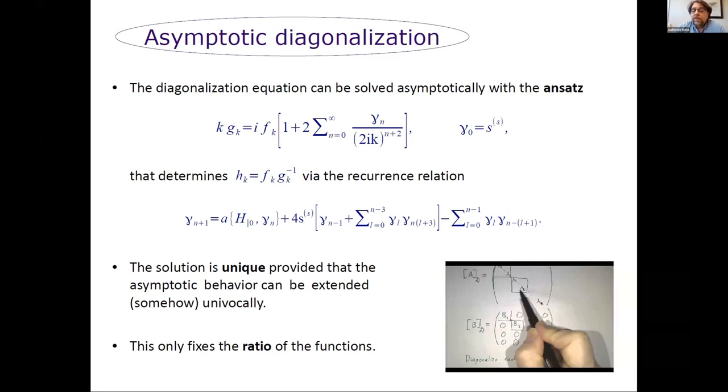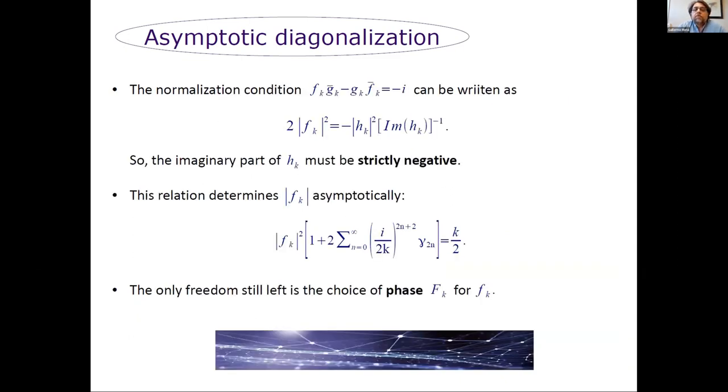Even so, we have only fixed the ratio of our functions f and g, so we still have some freedom, for instance, in fixing the function f. Well, the freedom is not so much, because you have the normalization condition, and this imposes, or this amounts to fixing the norm of the function f, once you know the solution for the complex frequency. Furthermore, it tells us that the solution must have a negative imaginary part, because the norm has to be positive.